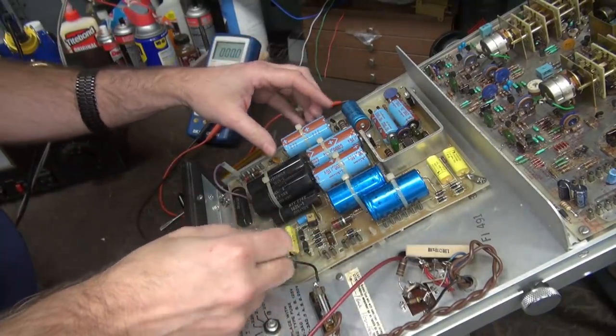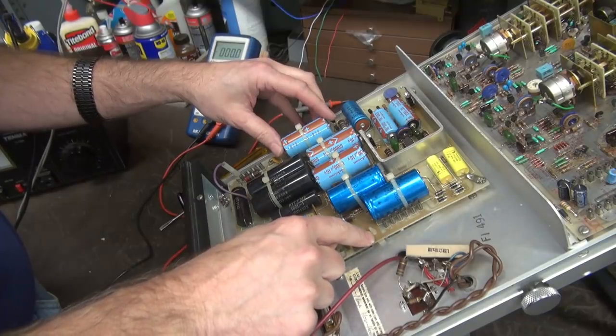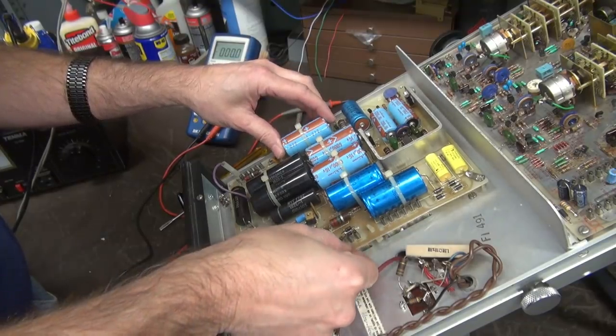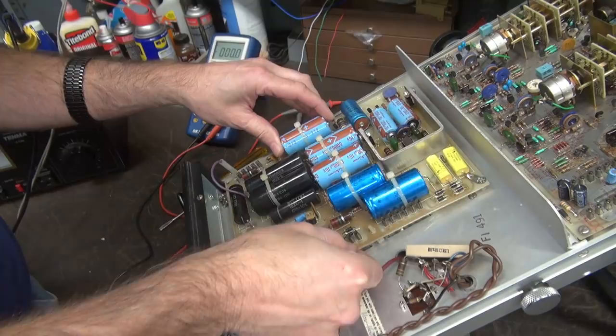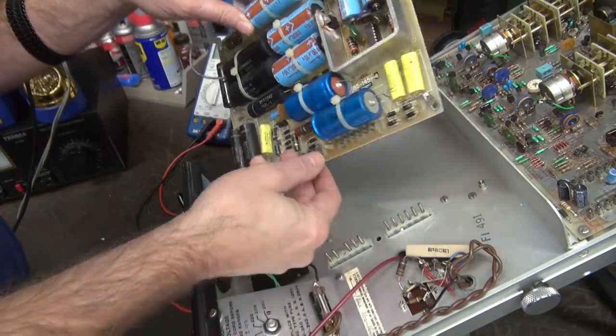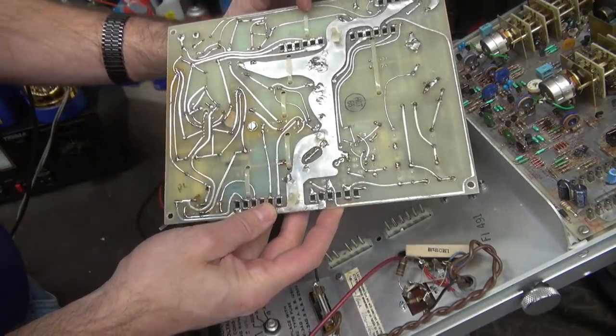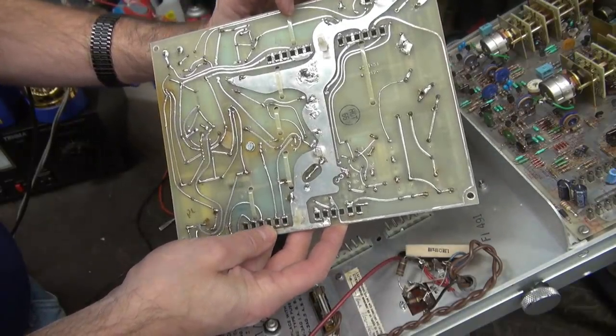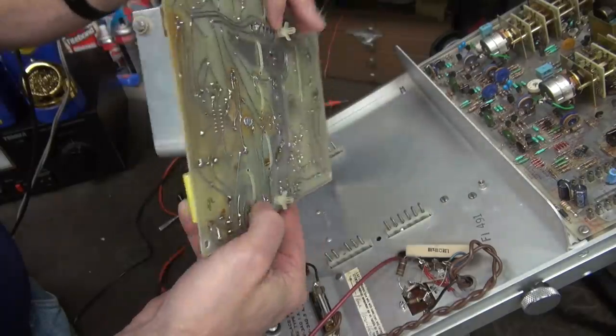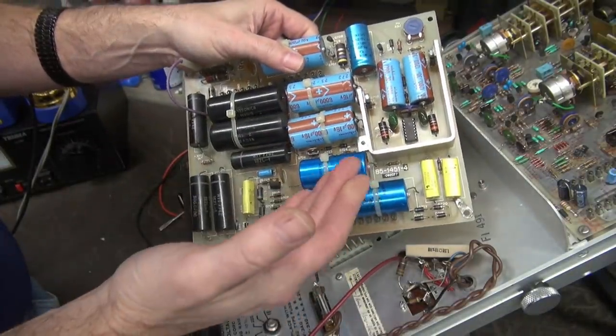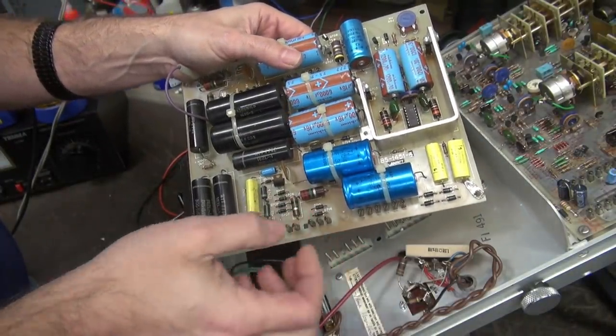I took out the four screws and there's a couple little nylon restraints here, but I noticed they don't seem to be going to anything. Probably broken. So the board's out. There's a bottom side. Nothing alarming. So I'm going to go ahead and change the caps, inspect it. We'll put it back in and try it.